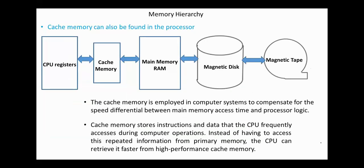The next component in the hierarchy is cache memory. Cache memory stores instructions and data that the CPU frequently accesses during computer operations. Instead of having to access this repeated information from RAM, the CPU can retrieve them faster from high-performance cache memory.